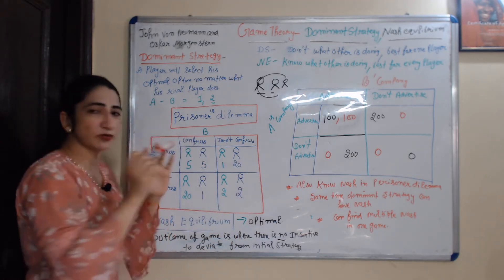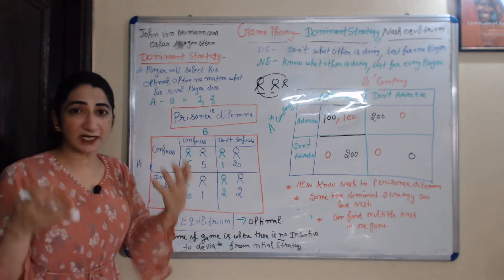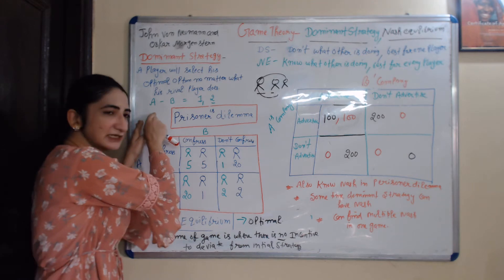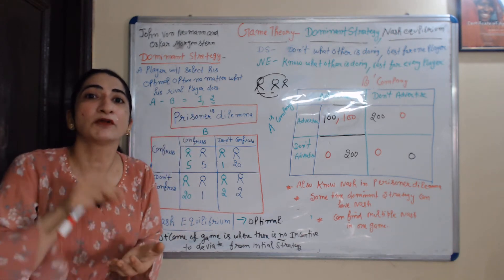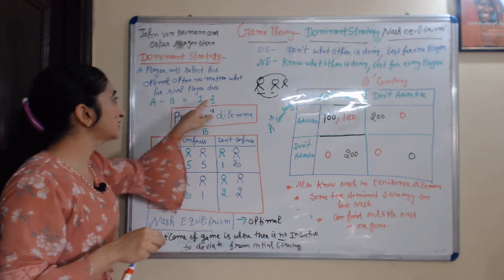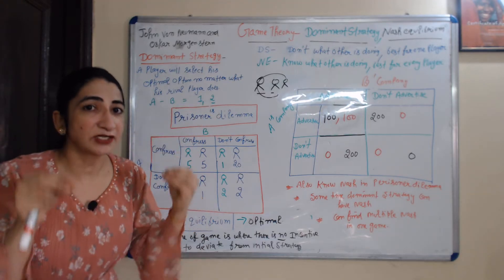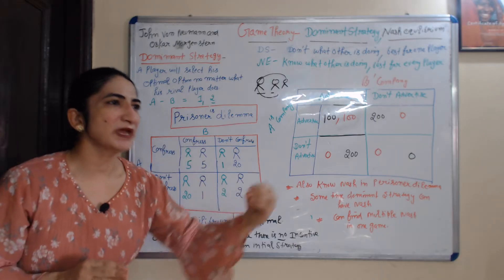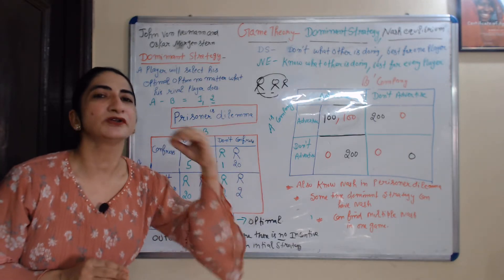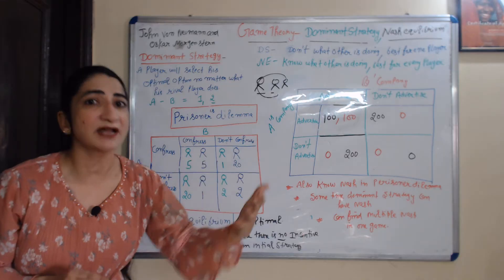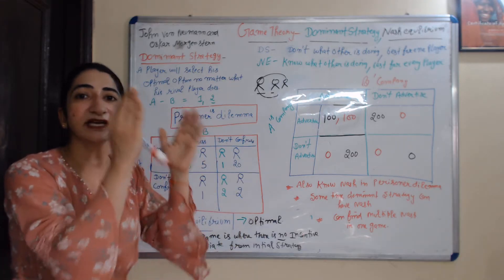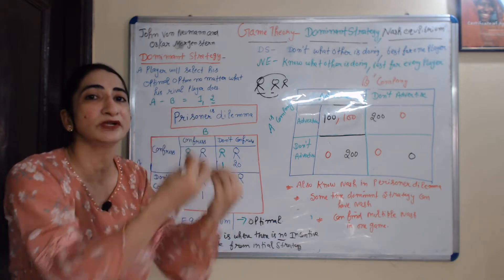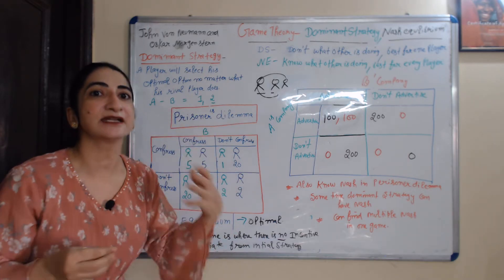For example, there are two players A and B, and there are two options: one and two. Whatever option A selects, he will see that this option is best for him. For example, A selects option two — he sees this is best for him, no matter what option B is going to select. He doesn't consider that; he sees only his own interest. That is exactly dominant strategy.